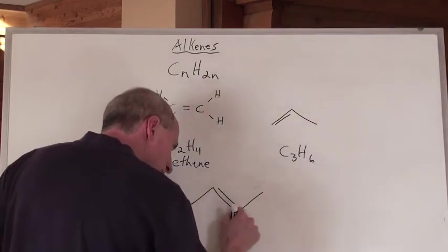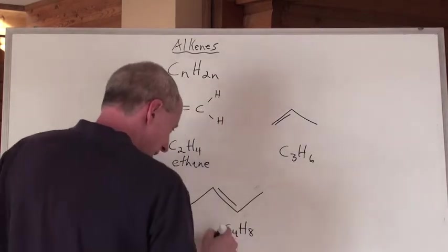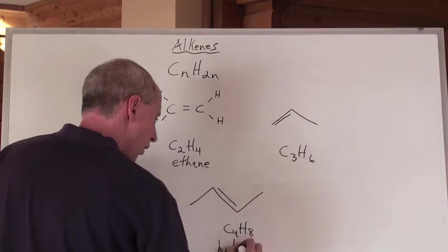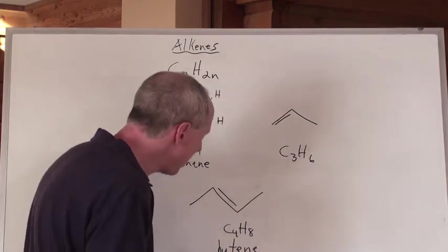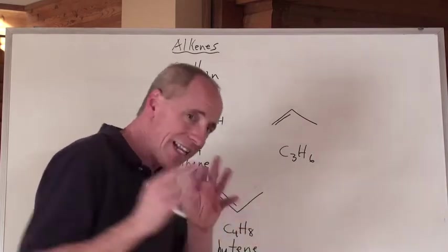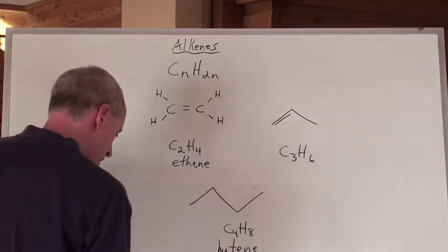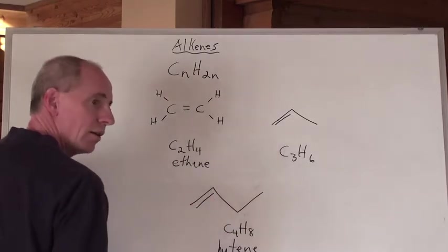But that double bond there, you know, that could be - that's a butene. One, two, three, four. And it's an 'ene'. But here's the thing. That 'ene' could have been, instead of there, here. Do you see that?